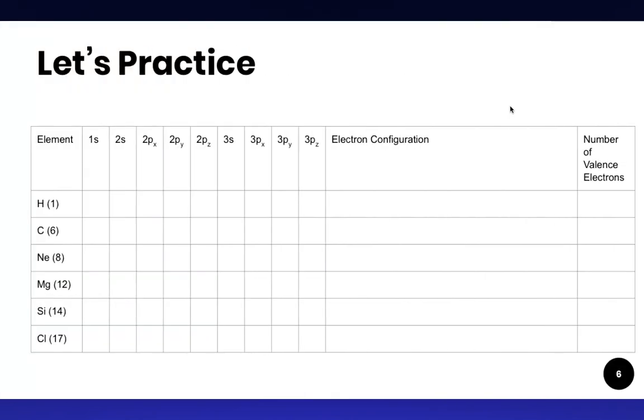Let's practice. Starting with hydrogen. Easy. It only has one electron, so we put one in. The electron configuration is 1s1. And the number of valence electrons, because the highest occupied energy level is one, there is one valence electron.